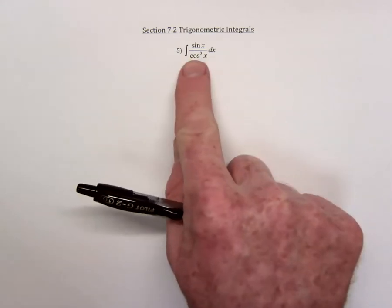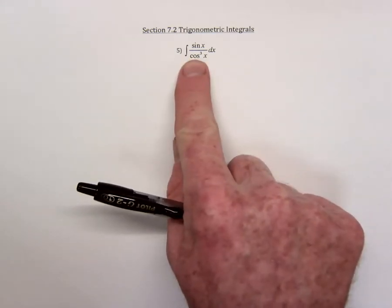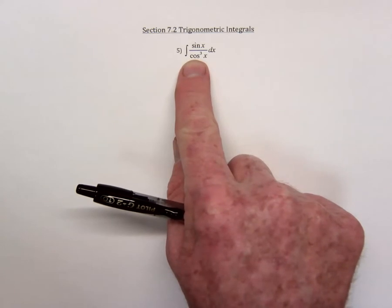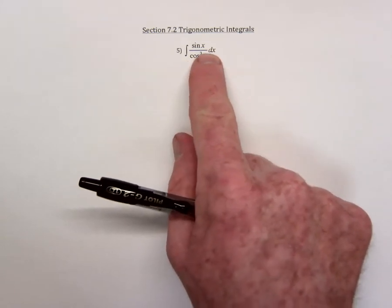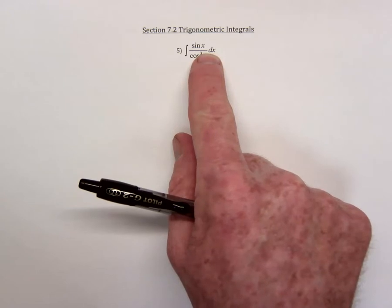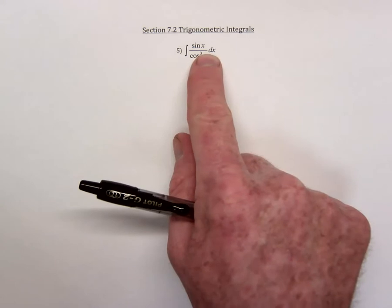You try, I'm going to try u equals sine of x. The derivative of that is cosine, so this would mean that du would be cubed, which makes absolutely no sense. To cube that makes no sense, so my choice of u equals sine is not a good idea.